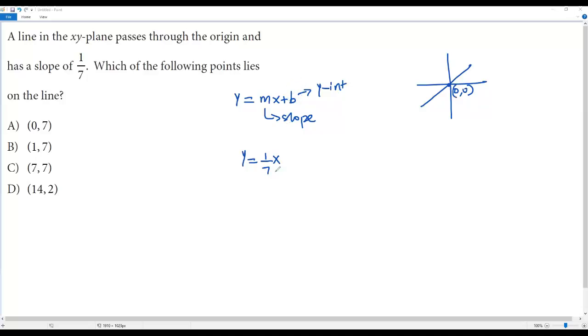If we plug in b = 0, we get (1/7)x + 0. We can write this as y = (1/7)x. This is the equation of the given line.